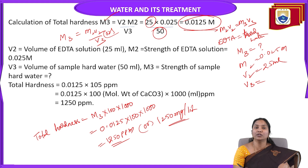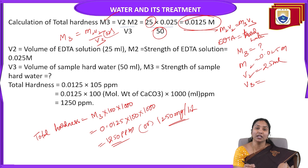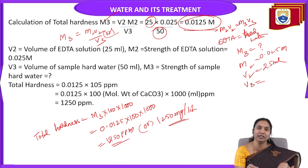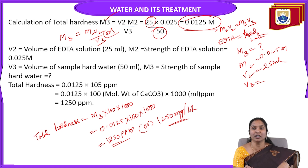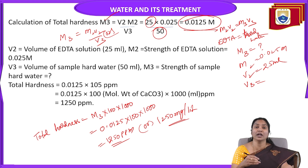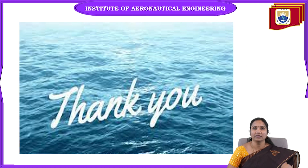In this way you can calculate the total, temporary, and permanent hardness of water by using the EDTA method. The first two problems used the direct milligram equivalent approach, while the last problem used the M1V1=M2V2 and M2V2=M3V3 formula method. In this session we learned how to calculate total hardness, permanent hardness, and temporary hardness of water, and how to convert them into calcium carbonate equivalent using the EDTA method. I hope you understood. Thank you.